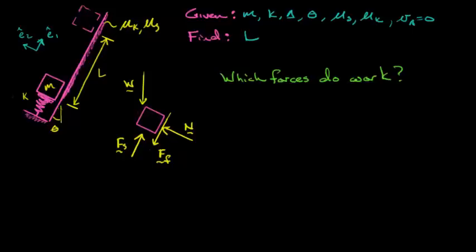So in approaching this with the work energy principle, the first question I want to ask is which forces do the work? So we'll start off. We'll go about one by one through these forces starting with the weight. The weight does negative work because gravity is pulling downward, right? The weight force is pulling downward, but the block is moving upward. So that F dot dr, that dot product is going to be negative.